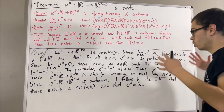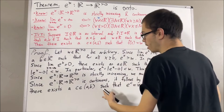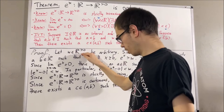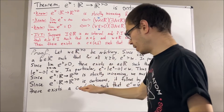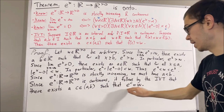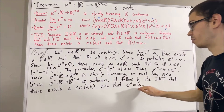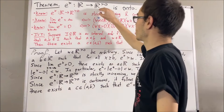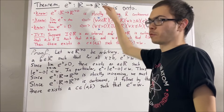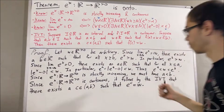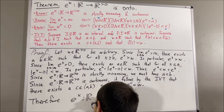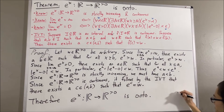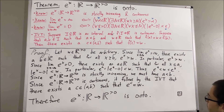What have we shown here? We have shown that given any positive real number w, we can find a real number c such that e^c = w. But that's precisely what it means for the exponential function to map onto the positive real numbers. And so, this completes the proof.